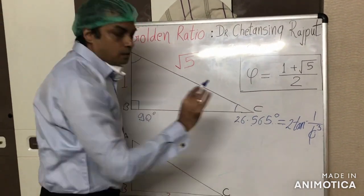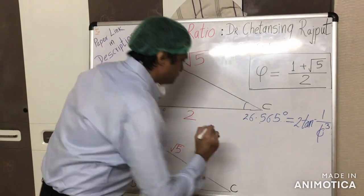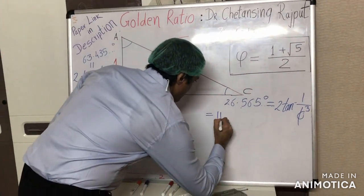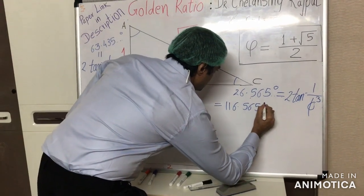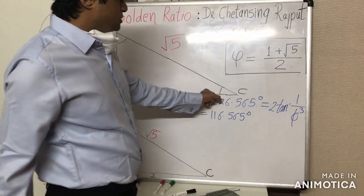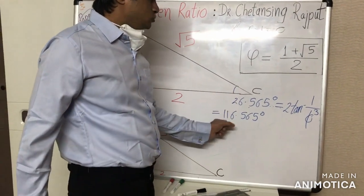These two angles add up to a very peculiar value which is equal to 116.565 degrees. 90 degrees plus this smaller acute angle, they add up to this value.